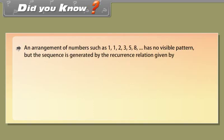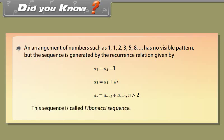Did you know? An arrangement of numbers such as 1, 1, 2, 3, 5, 8, and so on has no visible pattern. But the sequence is generated by the recurrence relation: A1 = A2 = 1, A3 = A1 + A2, and An = A(n−2) + A(n−1) for n > 2. This sequence is called the Fibonacci sequence.